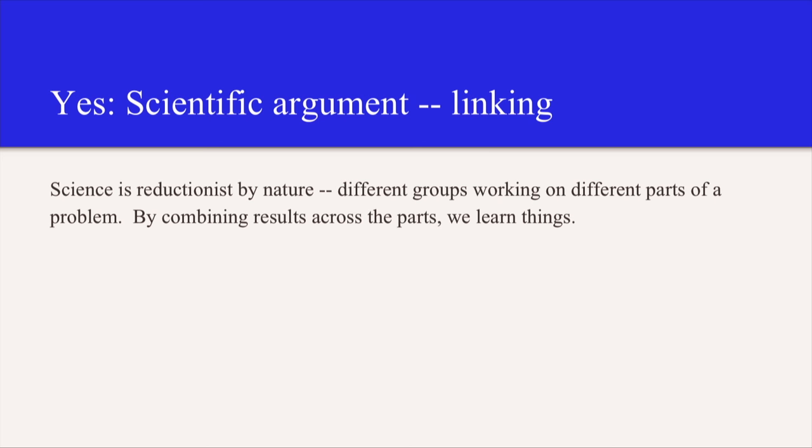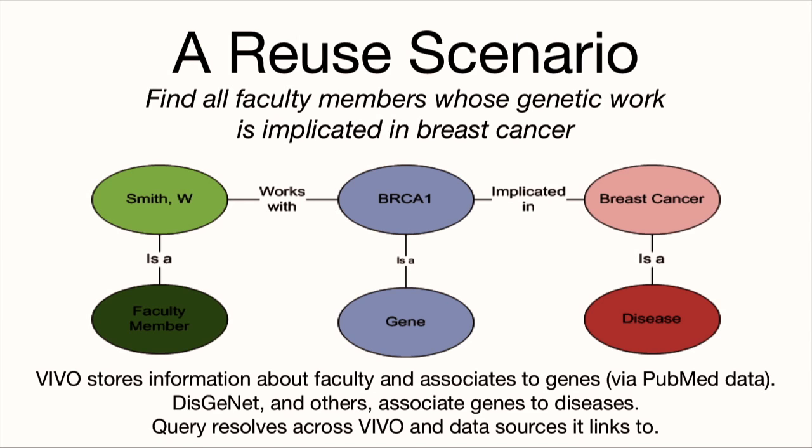I have several cases that we'll go with. Here's a scientific argument first. There's a scientific argument around linking. So science is reductionist by nature. Different groups work on different parts of the problem. And then we need to combine those results across the different parts so that we can learn new things. Seems pretty clear. So here's a reuse scenario. Also involves BRCA1. The question is find all the faculty members whose genetic work is implicated in breast cancer. That's hard to do because the people who know about molecular science and what molecules are involved in breast cancer are not the people who are looking at the papers. So you have a faculty member. They work with a particular gene. That gene is implicated in breast cancer. So the source of those two data, the fact that the faculty member works with a particular substance and the fact that that substance is involved in a particular disease, those two ideas come from two different directions, curated by different people, and need to be associated in one place in order to be able to answer that kind of query. So it's a data linking kind of scenario.